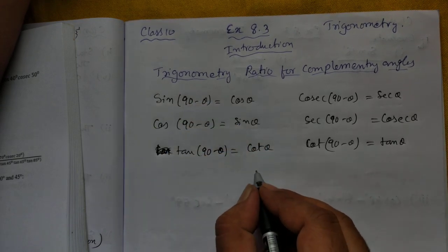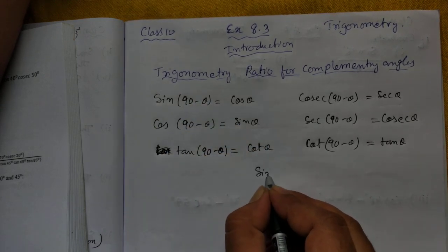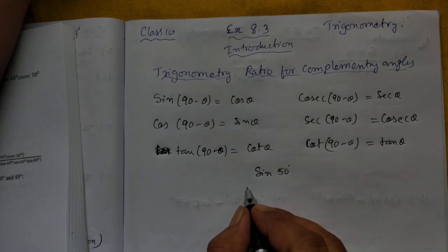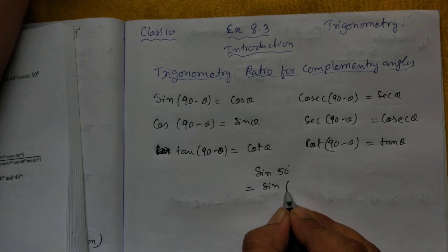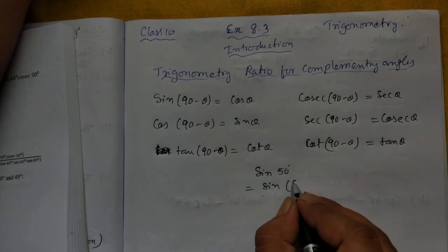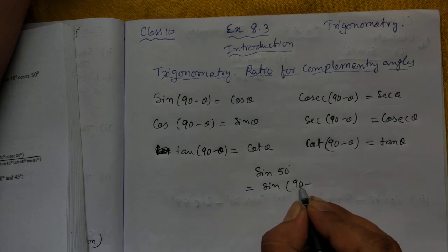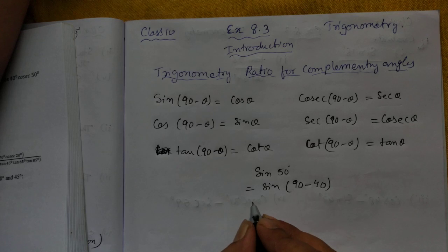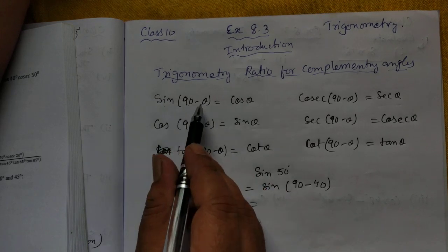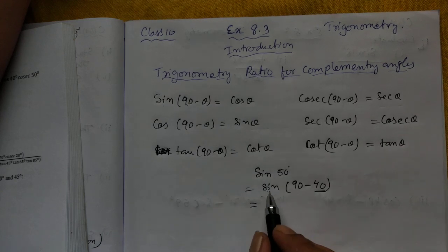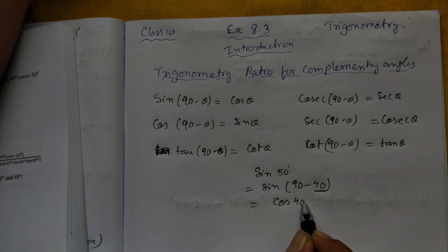Let me give you an example. Suppose you are given sin 50°. How do we find the value? Instead of 50, we write 90 minus something. Since 90 minus 40 equals 50, we write sin(90° − 40°). Using the formula sin(90° − θ) = cos θ, where θ = 40°, this becomes cos 40°.